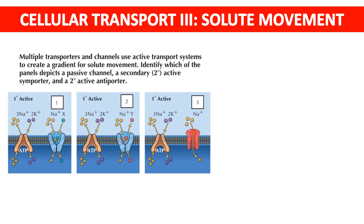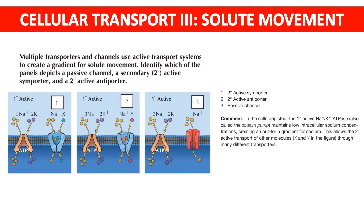Solute movement: multiple transporters and channels are used to create a gradient for solute movement. Identify which panels depict a passive channel, a secondary active symporter, and a secondary active antiporter. Number one is a second-degree active symporter, number two is a second-degree active antiporter, and number three is a passive channel. The first-degree active sodium-potassium ATPase (sodium pump) maintains low intracellular sodium concentration, creating an outside-to-inside gradient for sodium. This allows second-degree active transport of other molecules through many different transporters.